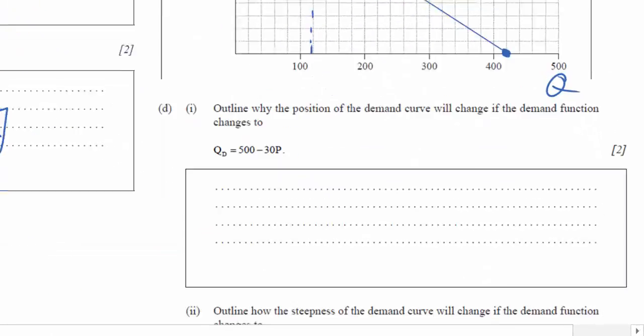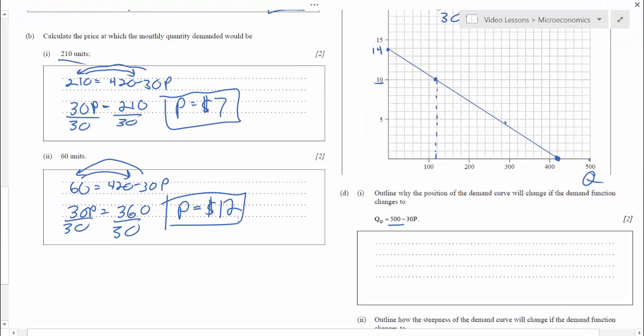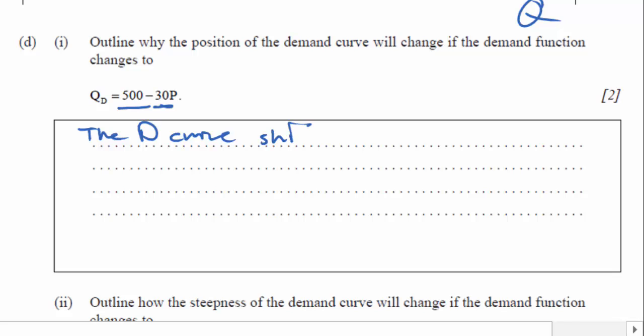Let's look at the next part of this problem. Outline why the position of the demand curve will change if the demand function changes to Qd equals 500 minus 30P. Well what's happened? If the a variable in our demand equation increases to 500, our entire demand curve is basically shifting to the right. But the b variable, which is the inverse of the slope, remains at 30 or negative 30. So the slope doesn't change, but the demand curve would move to the right. So I would answer this by saying that the demand curve shifts out because the quantity intercept increases.